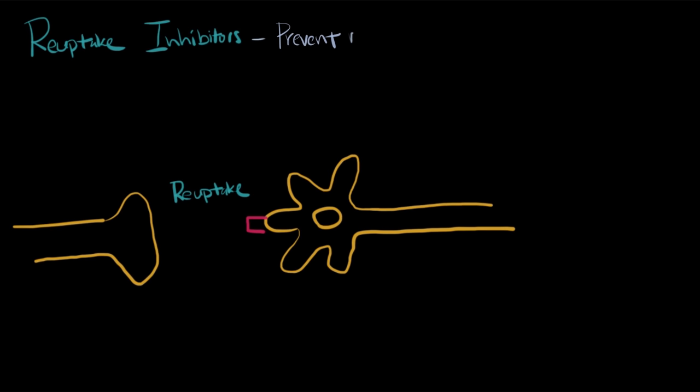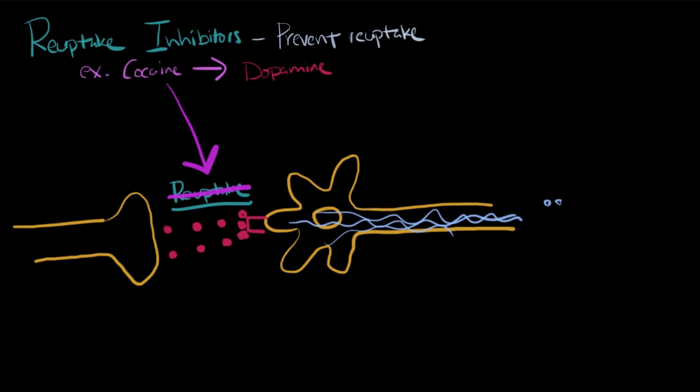An example of this is cocaine, which is a reuptake inhibitor of dopamine. Dopamine normally gives us a very happy sensation, but at the end of the signal, it's going to get reuptaken. However, if you give cocaine, you're going to block that reuptake. This is going to keep the levels of dopamine in the synapse at very high levels. Thus, it will continue to give us that sensation and continue to give us that happiness or high, which is where the effects of cocaine come from.